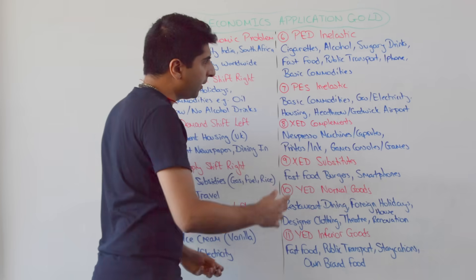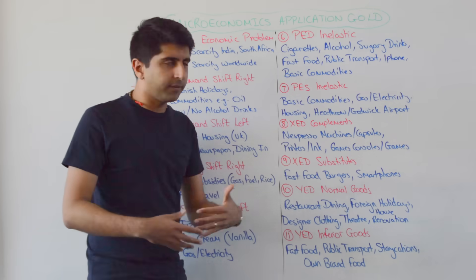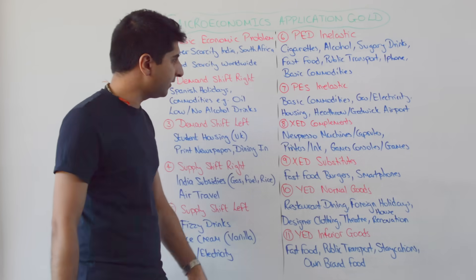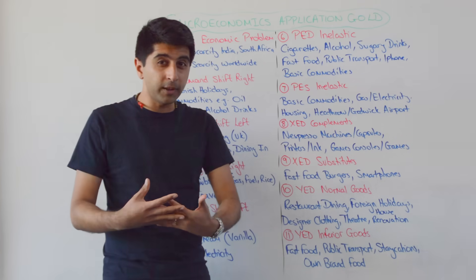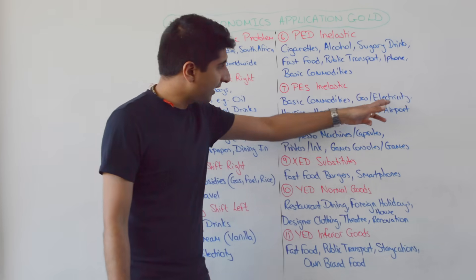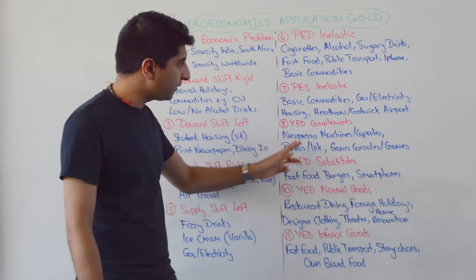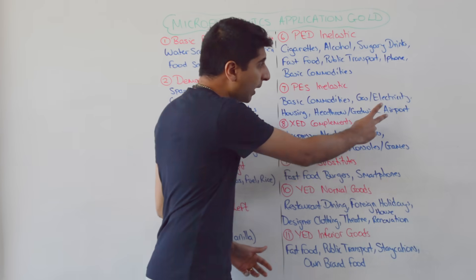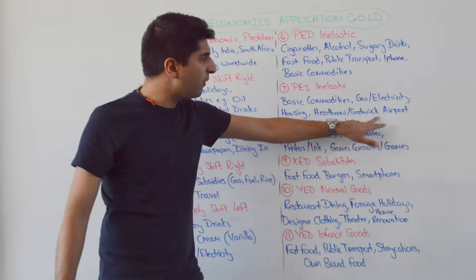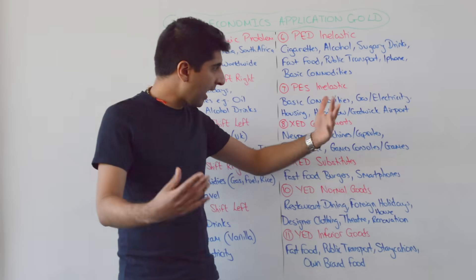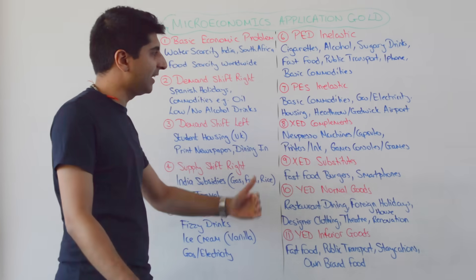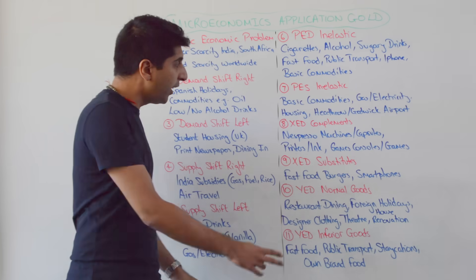What about supply goods where supply is price inelastic? Basic commodities — hard to store them, large production labs. Gas, electricity, housing. Heathrow and Gatwick Airport have very, very low spare capacity, hence very price inelastic supply.